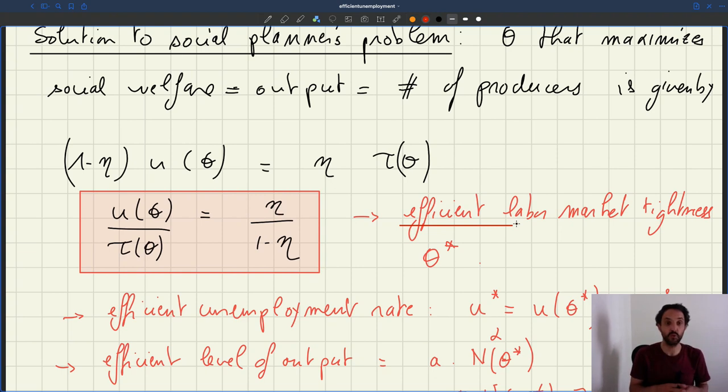And so we can check in the real world if it holds or not, to know whether or not we're at efficiency. We can compare u, we can compare tau, and try to see whether it's equal to eta over 1 minus theta, to see whether we have efficiency.